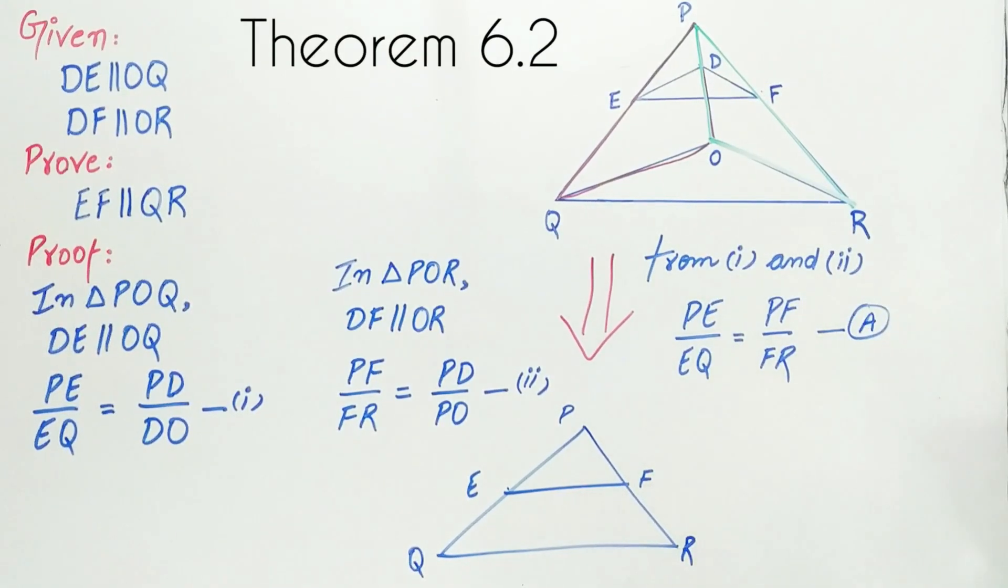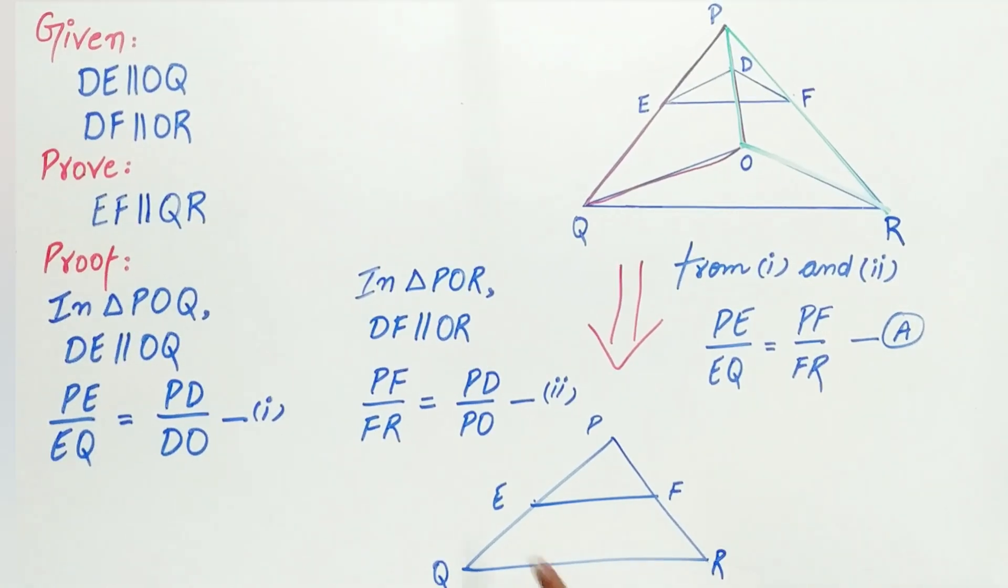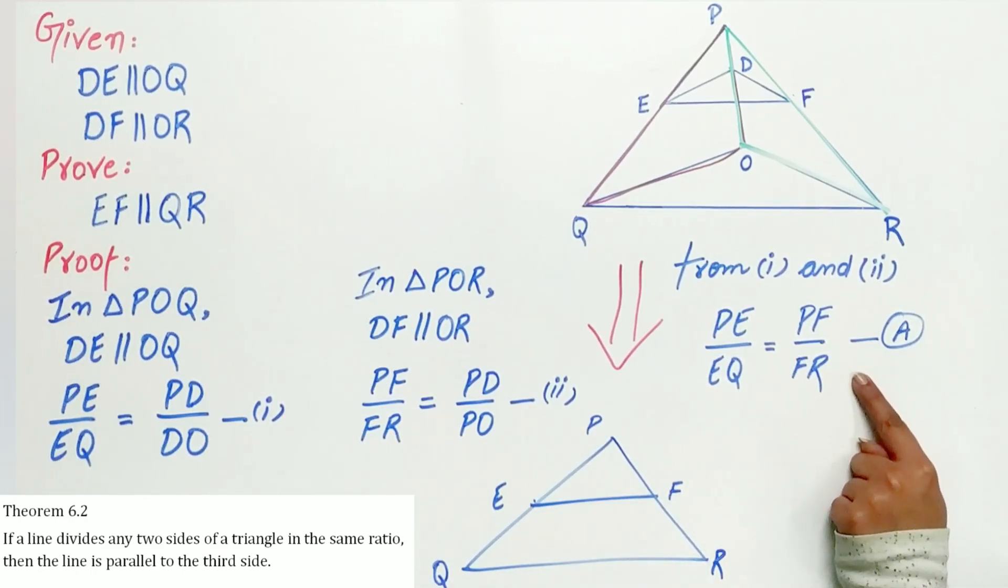So, let's mark it as one. So, can I say by theorem 6.2 that if a line divides any two sides of the triangle in the same ratio, then the line is parallel to the third side of the triangle.